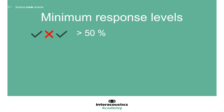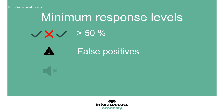In determining whether a response has been given, it is important to beware of false positives or checking. A false positive response occurs when the child checks to look for the visual reinforcer regardless of sound stimulus presentation. If a checking response coincides with the presentation of the stimulus, it can be mistaken for a true positive response. No-sound trials can be used to help ascertain to what extent the child is checking, and an increase in the level of engagement with the second tester can help to reduce the amount of checking.